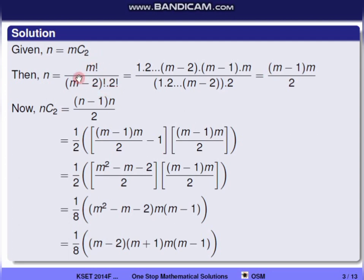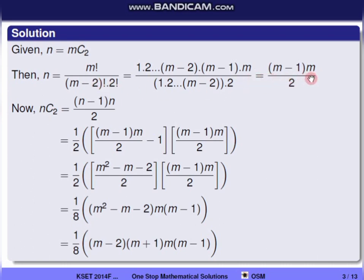Now I will open the factorial terms. We have n equal to (m minus 2)(m minus 1)(m) divided by 1 into 2 into (m minus 2) into 2. Similar terms cancel, so we have n equal to (m minus 1) into m divided by 2.